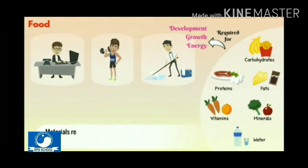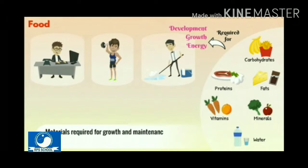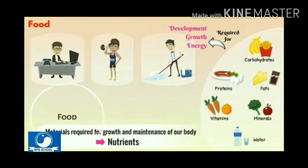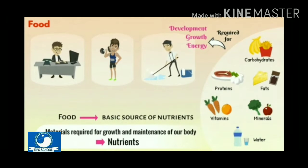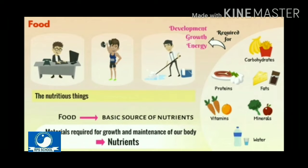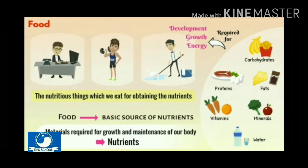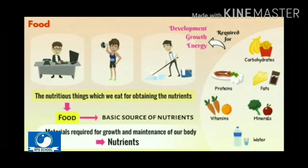Basically, the materials required for growth and maintenance of our body are called nutrients. Food is the basic source of nutrients. The nutritious things which we eat for obtaining the nutrients are called food.